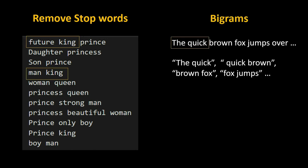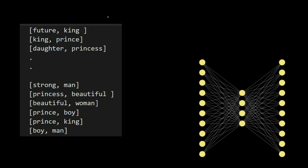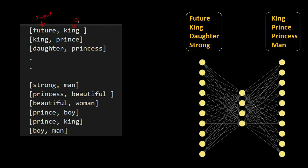Then we create bigrams. Bigrams are two consecutive words occurring in a sentence. For example, if our sentence is 'the quick brown fox jumps over the lazy dog,' the bigrams would be 'the quick,' 'quick brown,' 'brown fox,' 'fox jumps,' and so on. We get bigrams from every sentence. For example, from 'future king prince' we create two bigrams: 'future king' and 'king prince.' The first word in the bigram acts as input to our neural network and the second word acts as the output label.